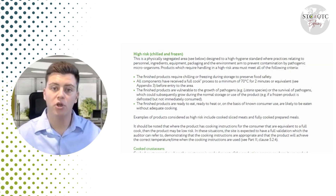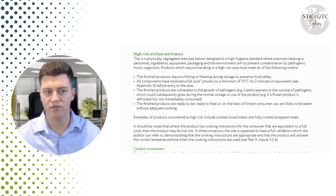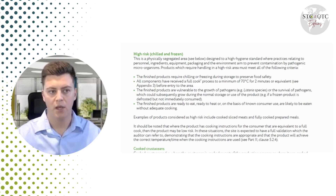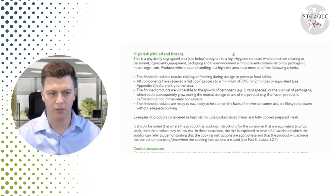A common mistake is confusing high risk foods with risk zones. High risk foods are those prone to the growth or survival of pathogens — things like cooked food and ready-to-eat meals. But today our focus is on the zones, the areas in which these foods are handled. We'll break down the definitions for high risk, high care, and ambient high care.